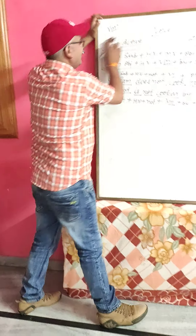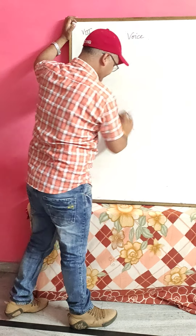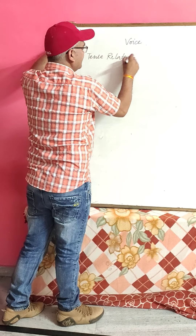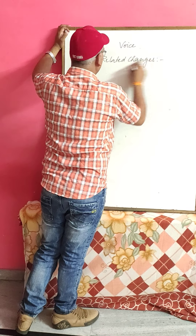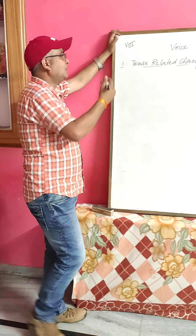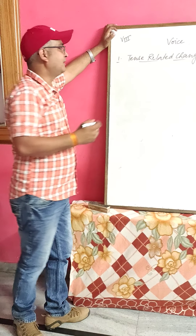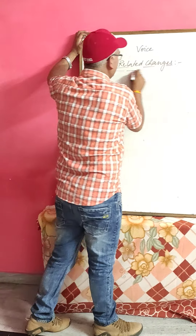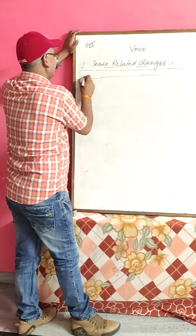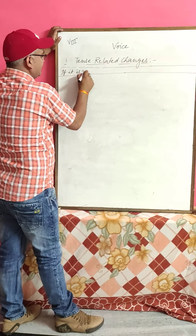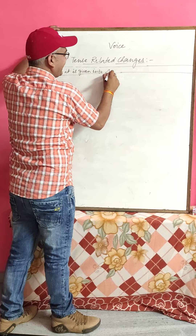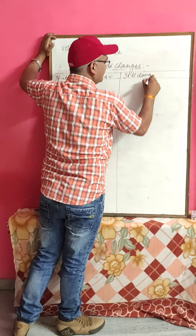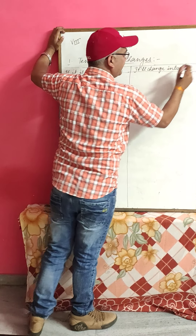Now, what are the basic changes we have to make? First, tense-related changes. If a sentence is given in active voice (AV), it will change into passive voice (PV). AV means active voice and PV means passive voice. So the first rule is: if we have simple present tense, it will change into the passive form.